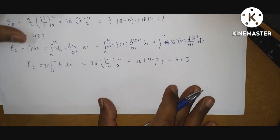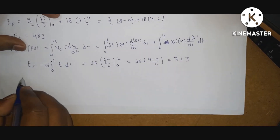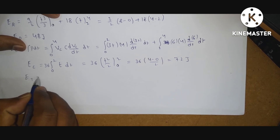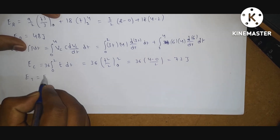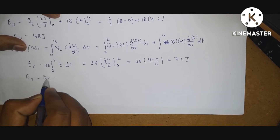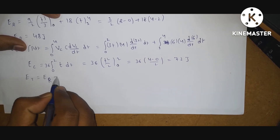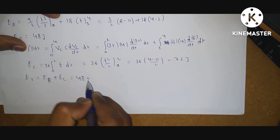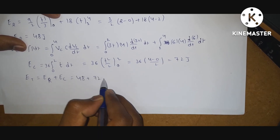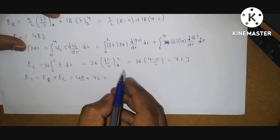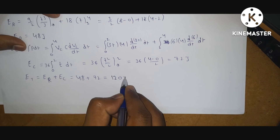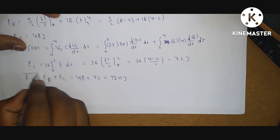So total energy absorbed is Et equals Er plus Ec, which is 48 plus 72. You will get 120 joules.